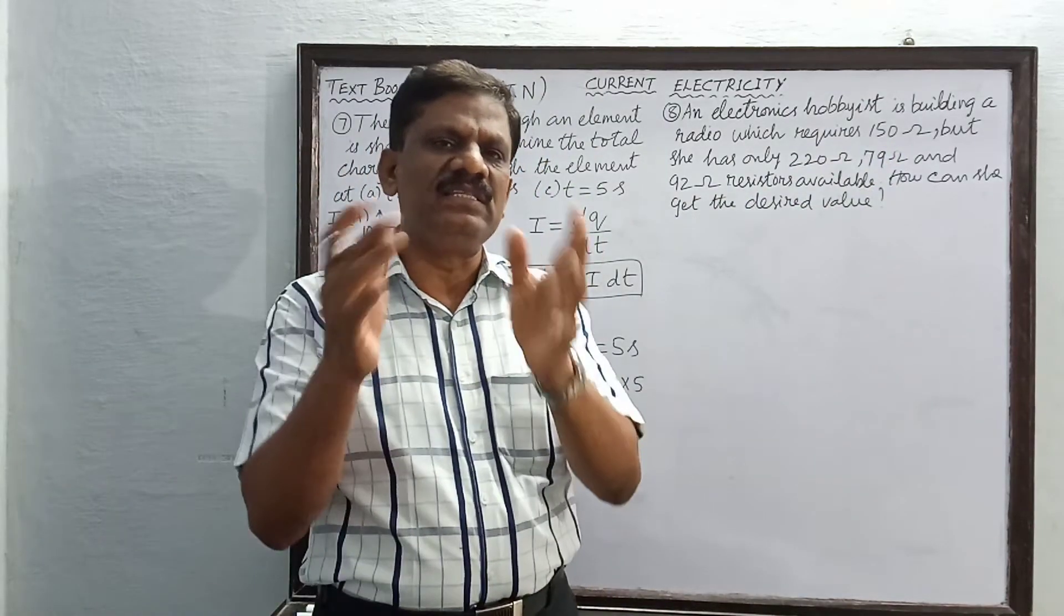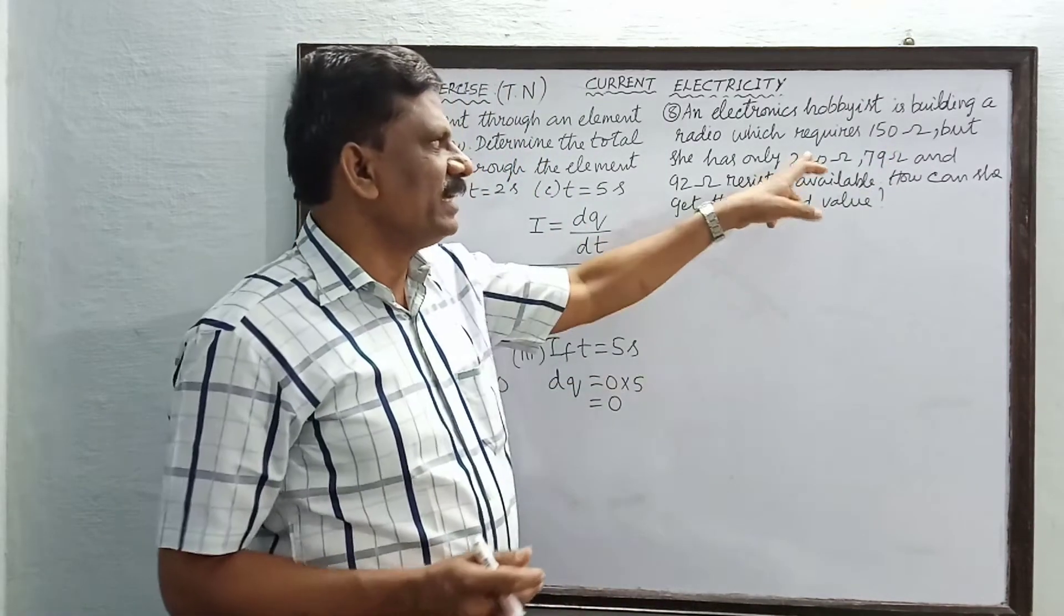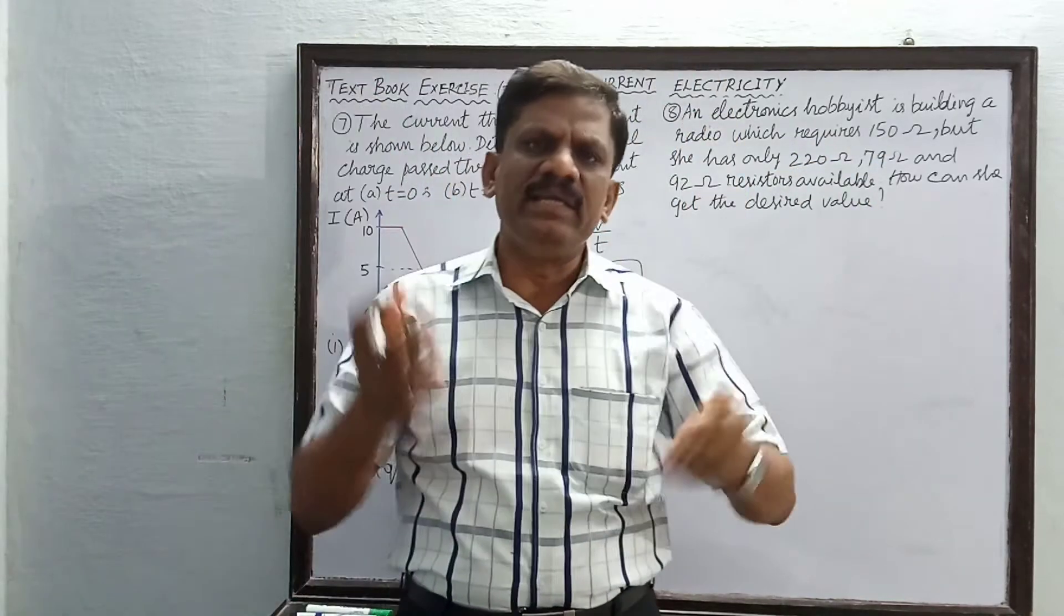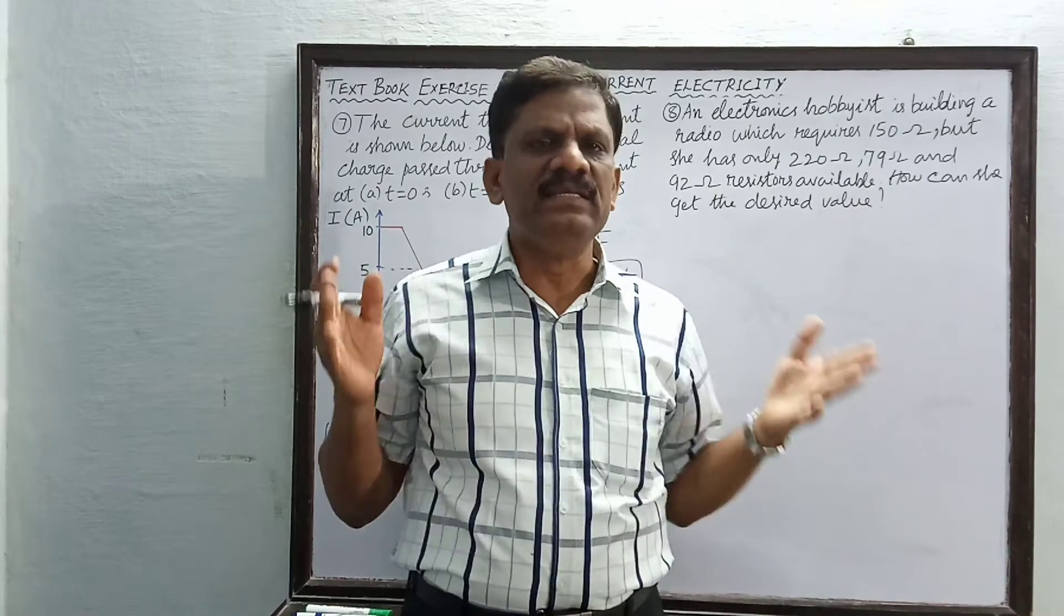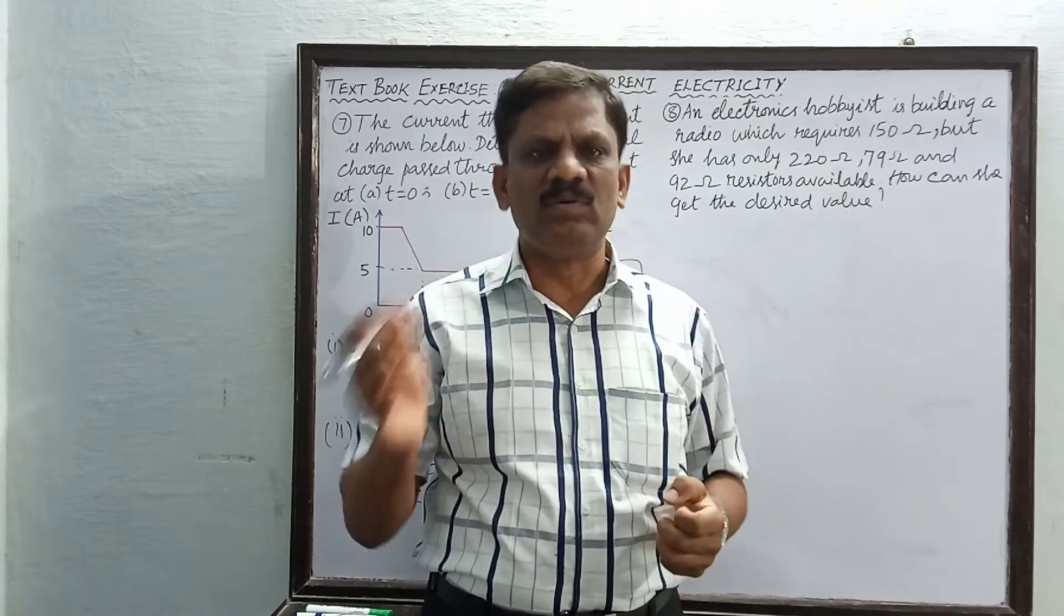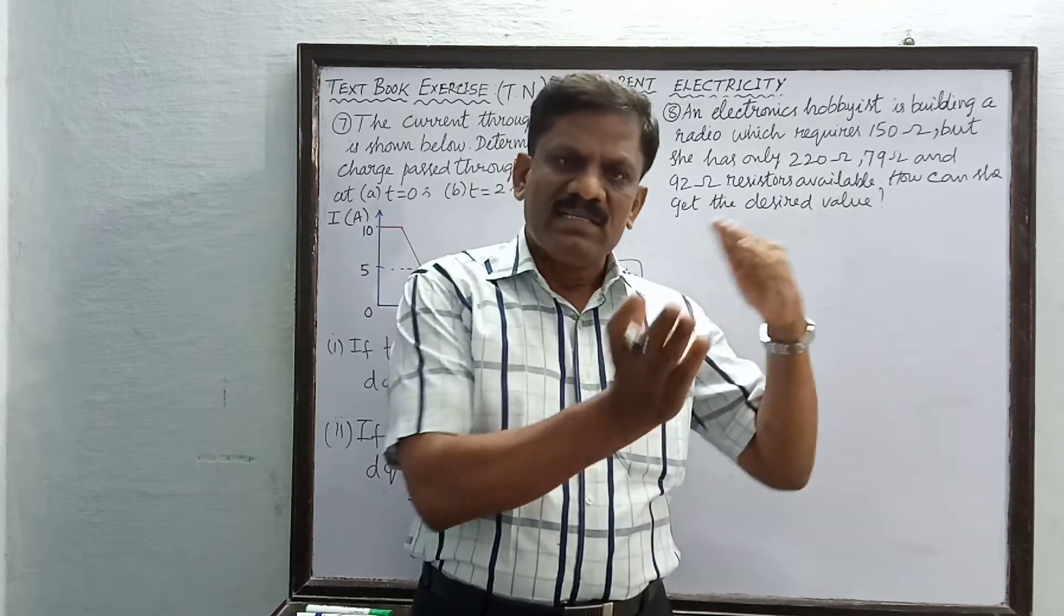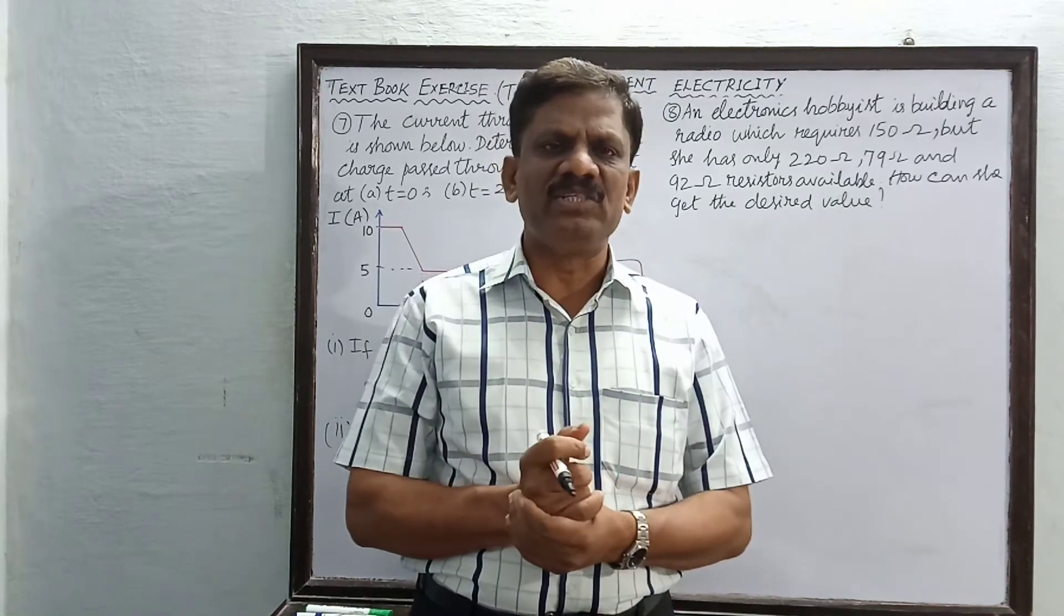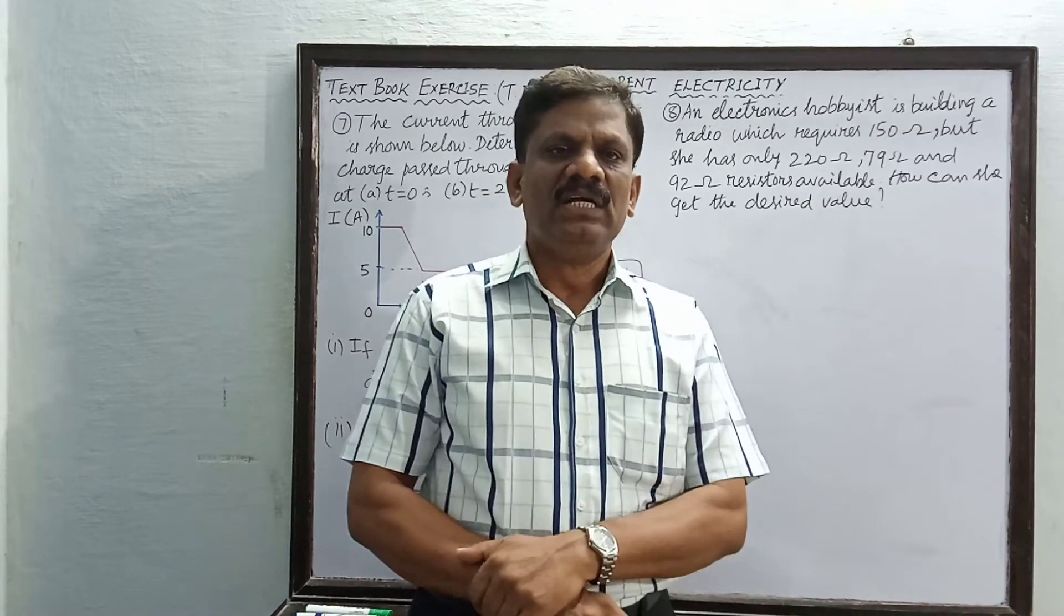How can she get the desired value of 150 ohms? By what combination of these three resistors can she construct 150 ohms? We can take all three in parallel, all three in series, or any two in parallel with the third in series. All possible combinations you have to try out first.